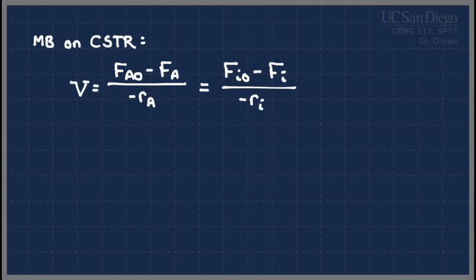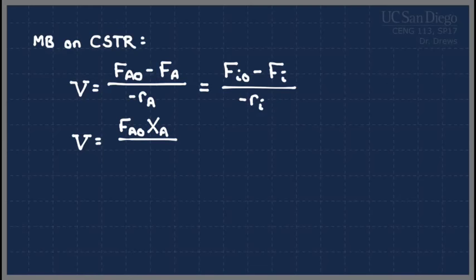If you have a single reaction, you may notice we always derive these in two ways: one in terms of molar flow rate and another in terms of conversion. You can also write this in terms of conversion. That's mostly useful if you're worried about a single reaction — not so helpful if you have multiple reactions.